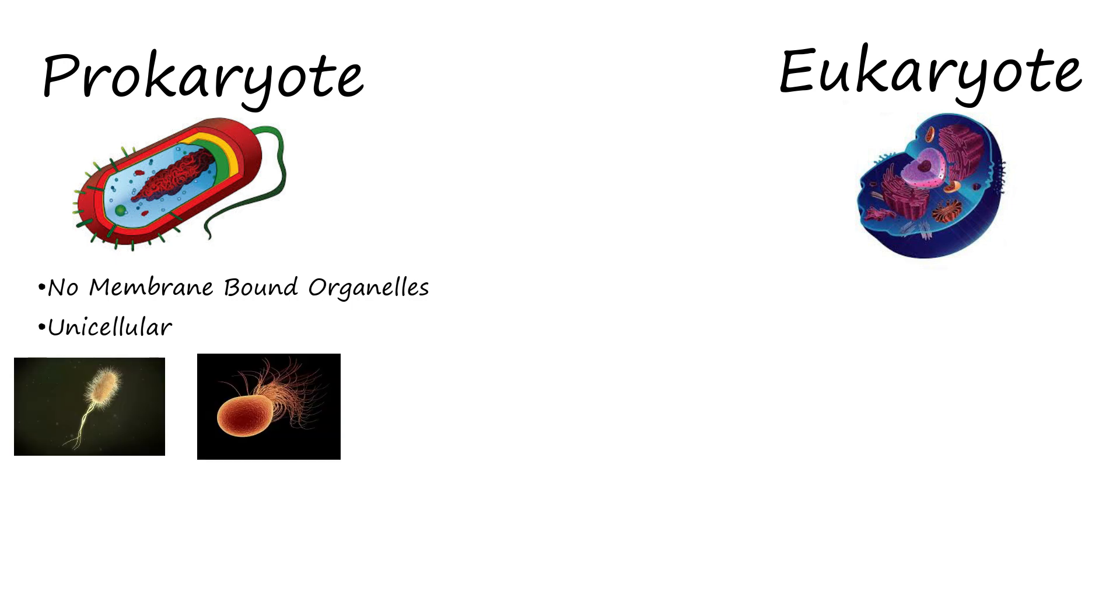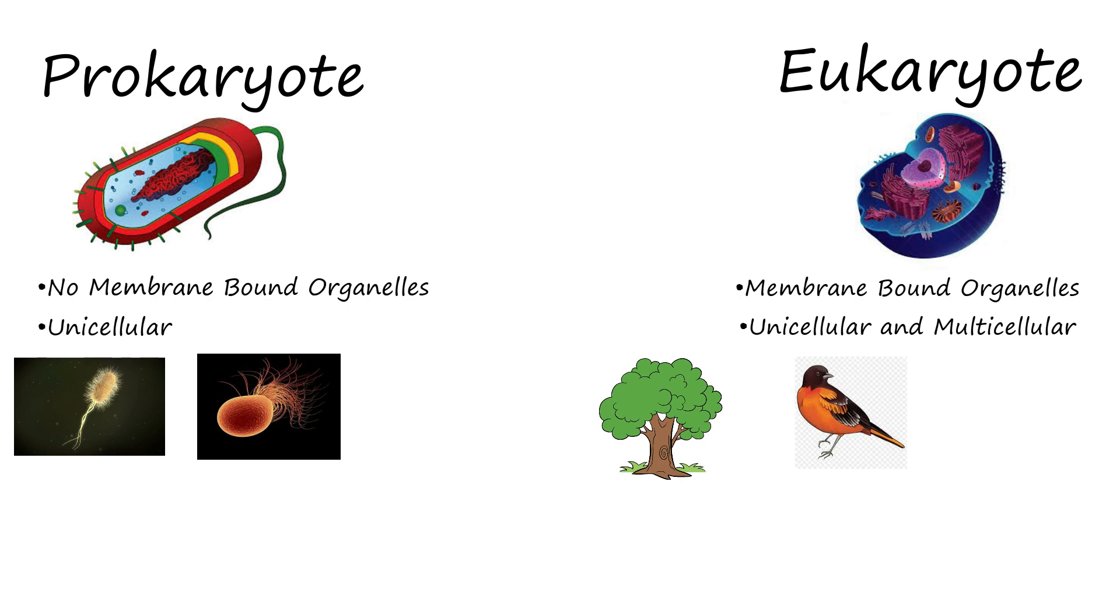Eukaryotic cells, however, have membrane bound organelles. They can be multicellular and unicellular, for example, plants, animals, and fungi.